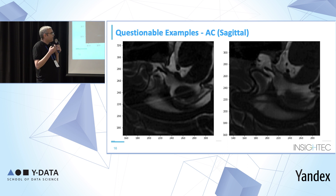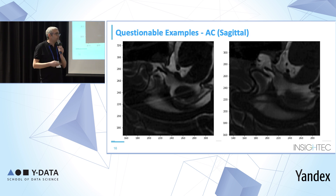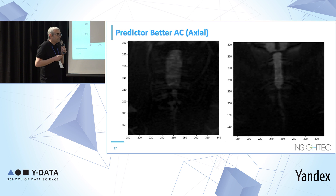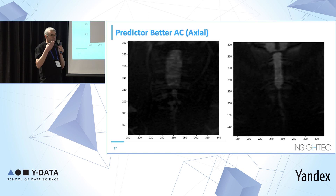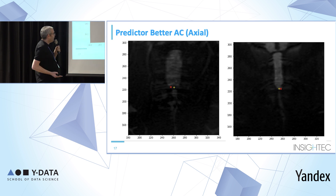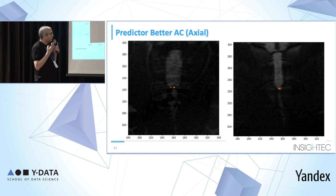Here we can see an example where the image behavior is a bit different — we don't have the circular valley we are used to, so the results differ somewhat between the predictor and the user. And here is a case where the CNN result was much better. We know both landmarks should sit on the symmetry line of the tissue shown here. The yellow cross — the predictor result — is sitting on the center line, but the red one is farther away to the side, so the predictor was clearly more accurate.